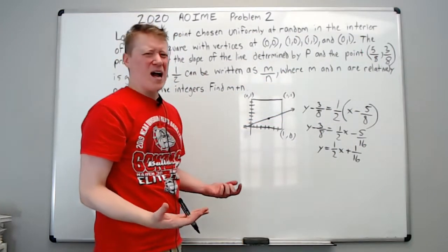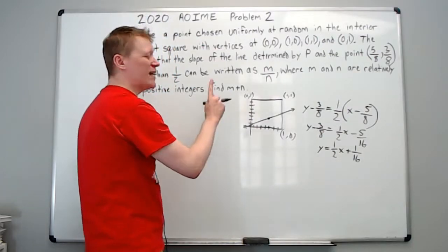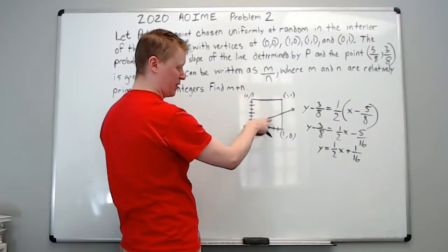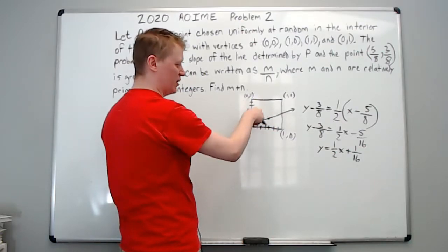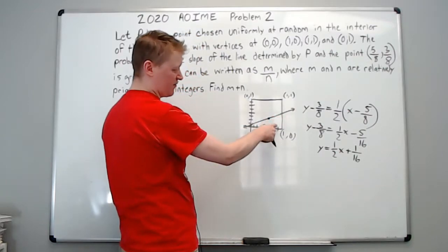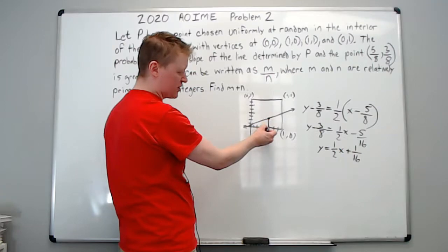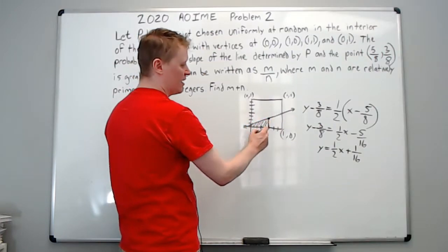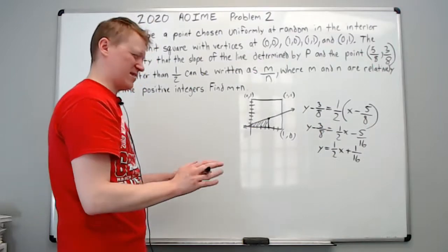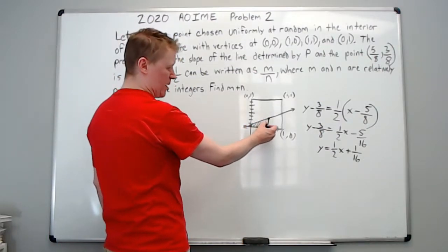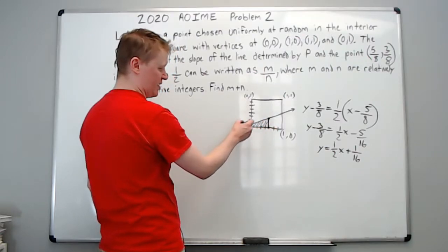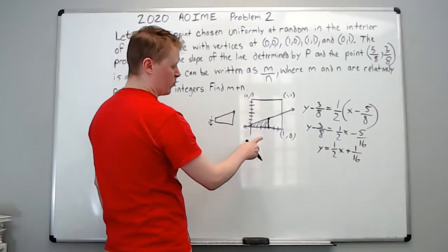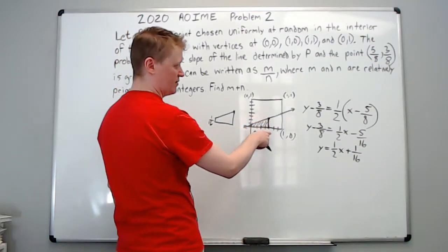Now that we have the line graphed, we want slope greater than one half. If P is above the line on the left side, the slope will be less than one half or negative. P has to be below this line on the left region. But if P is on the other side of the vertical line through (5/8, 3/8), it produces a negative slope. So P must be in the region below and to the left. Let's find that region first — it's a trapezoid. The height on the y-axis is 1/16 and the height at x = 5/8 is 3/8.